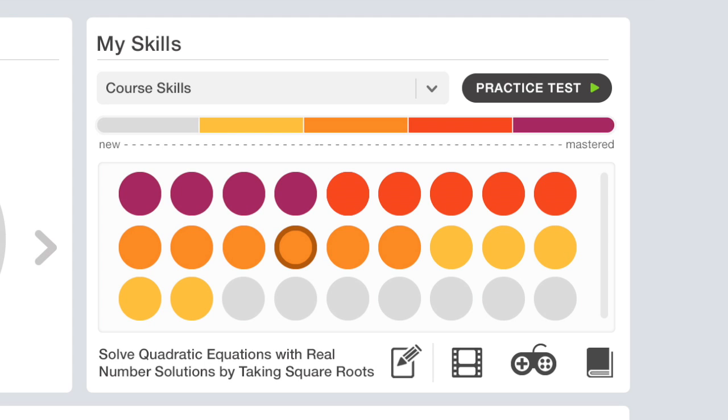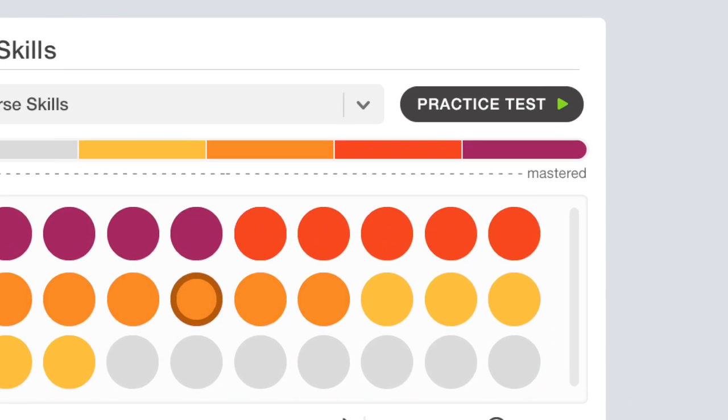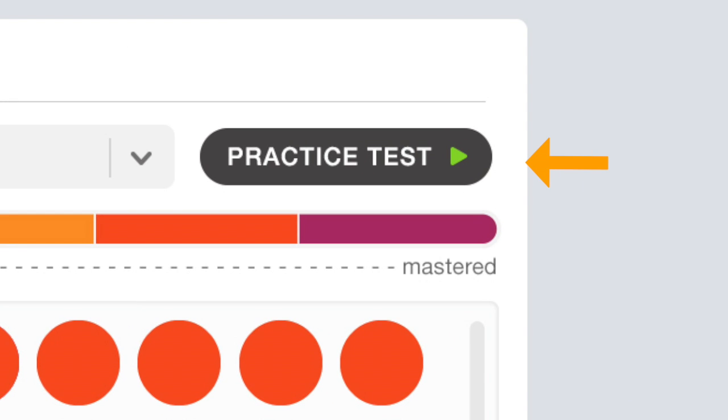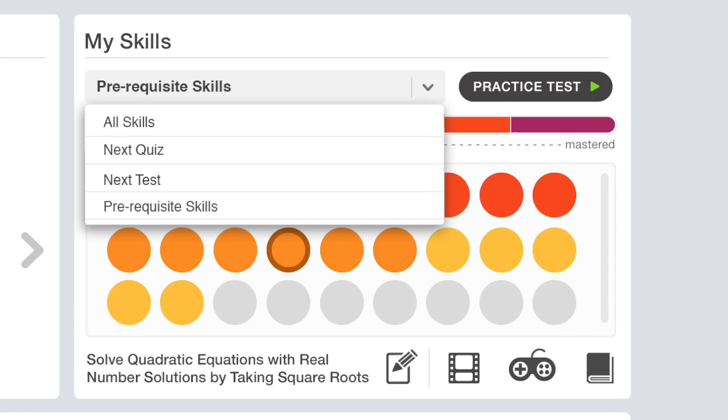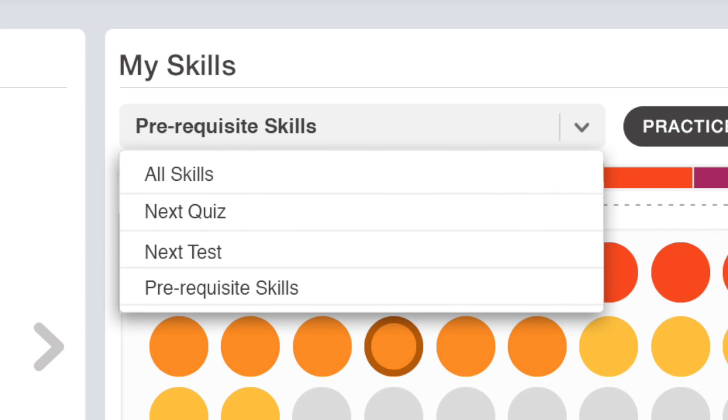In the My Skills section, you'll get an at-glance view of your progress, access to practice tests, and resources to help your success on all the learning objectives. From this drop-down menu, called the Skill Picker, you can select categories of learning objectives based on the skills contained in the entire course, the next quiz,